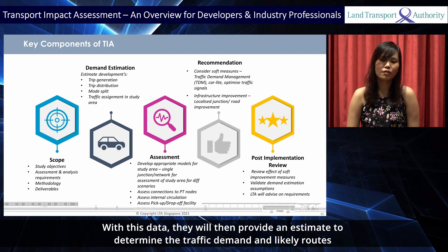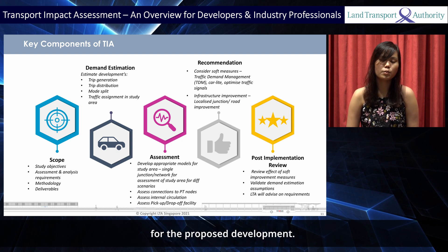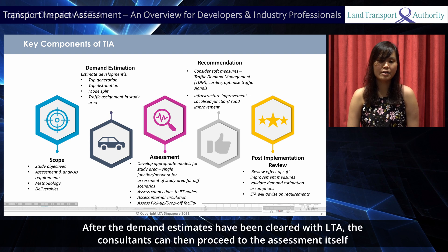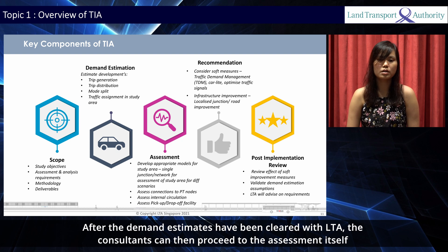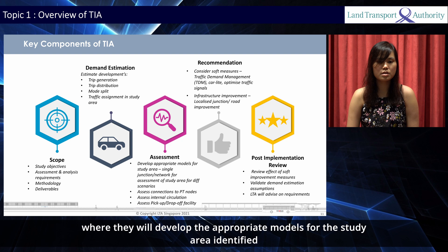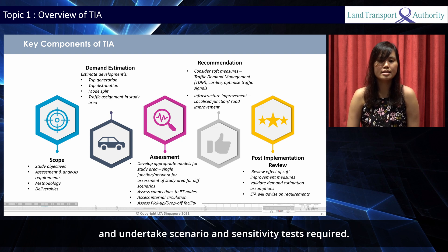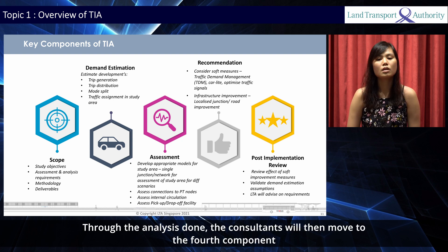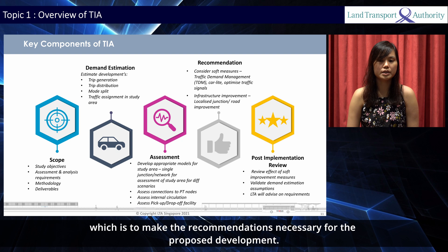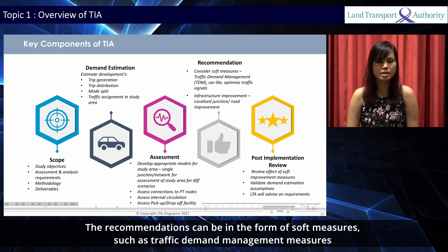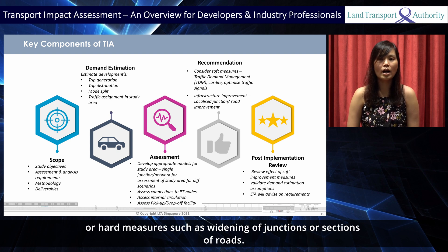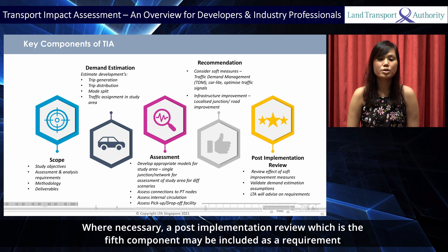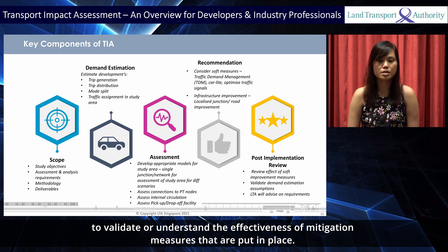With this data, they will then provide an estimate to determine the traffic demand and likely routes for the proposed development. After the demand estimates have been cleared with LTA, the consultants can then proceed to the assessment itself, where they will develop the appropriate models for the study area identified and undertake scenario and sensitivity tests required. Through the analysis done, the consultants will then move to the fourth component which is to make the recommendations necessary for the proposed development. The recommendations can be in the form of soft measures such as traffic demand management measures, or hard measures such as the widening of junctions or sections of roads. Where necessary, a post-implementation review — the fifth component — may be included as a requirement to validate or understand the effectiveness of mitigation measures that are put in place.